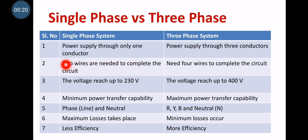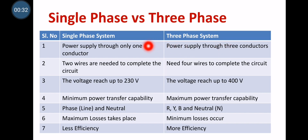Moving on to the first difference. In case of single-phase system, power supply is through only one conductor. But in case of three-phase system, power supply takes place through three conductors. In single-phase system, it is phase and neutral — one line representing phase, another one is neutral. But in case of three-phase system, you can represent it as R, Y, B and N. There are two types of three-phase connection: one is star connection, another one is delta connection.